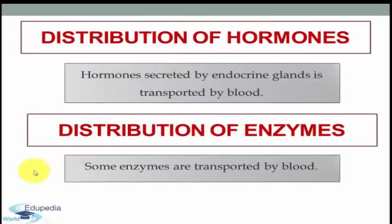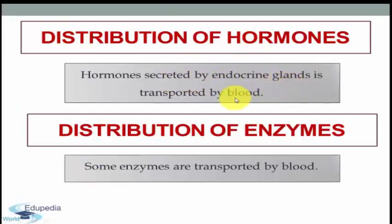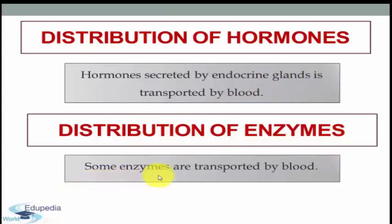Next we have distribution of hormones. Hormones secreted by endocrine glands are transported by blood. Distribution of enzymes is also one of the functions of blood, as some enzymes are transported by blood.